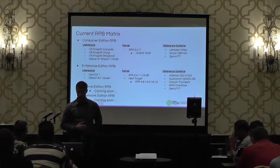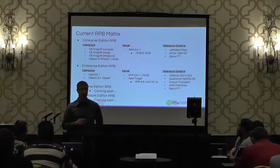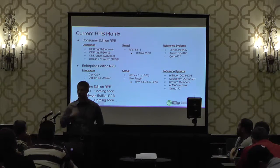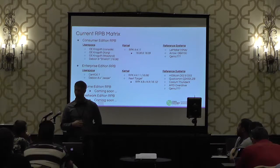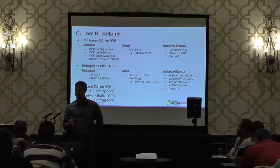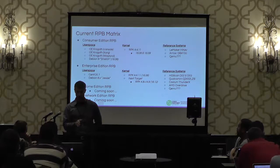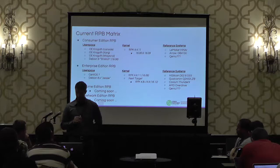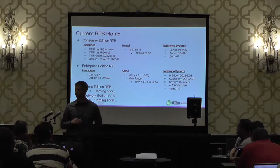On the Enterprise Edition RPB, user space builds today are focused around CentOS and Debian. The 1606 release went with a 4.4.11 kernel, and the target for the estimated 1612 release is 4.8, with hopefully the 4.9 LTS releasing near that timeframe. We would do a 1612 RPB release and then likely a point release when 4.9 releases. The current reference systems are the D02 and D03, also hoping to look at the D05 for 1612, plus the Qualcomm board, Cavium ThunderX, and the AMD Overdrive.